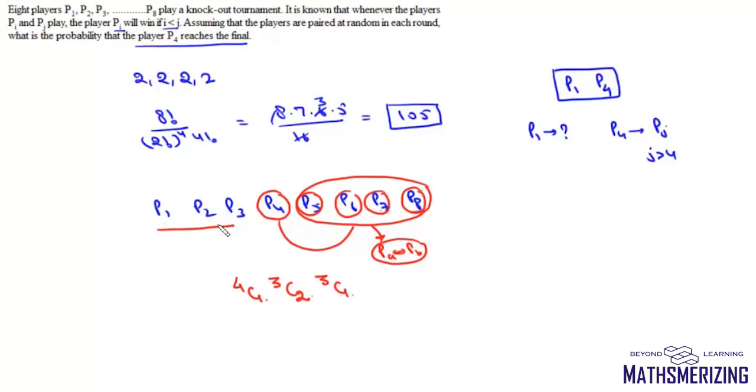So in the second round, now we'll have four players. P1 will be there, P4 will be there and then out of P2 and P3, one of them will be there. We'll say, suppose this is PH, P high and then one from lower and there'll be PL. So the probability that P4 goes to this next stage will be this value divided by total combinations which is 105.